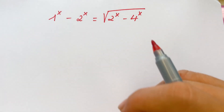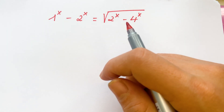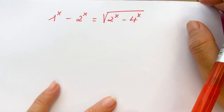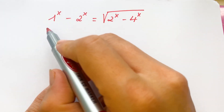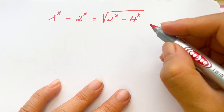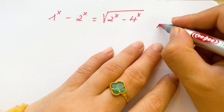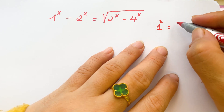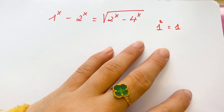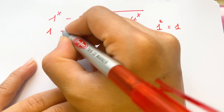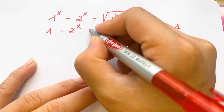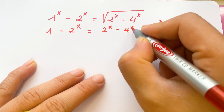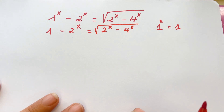Hello everyone! How to find the value of x in these exponential equations? Firstly, you can easily see that 1 power x equals 1, right? Because we have the exponential rule: 1 power n equals 1.